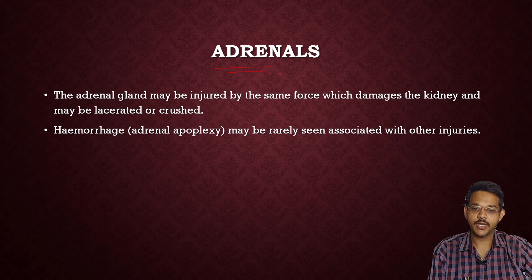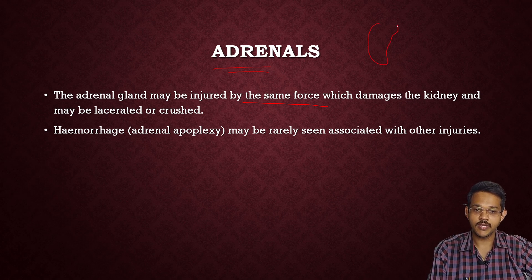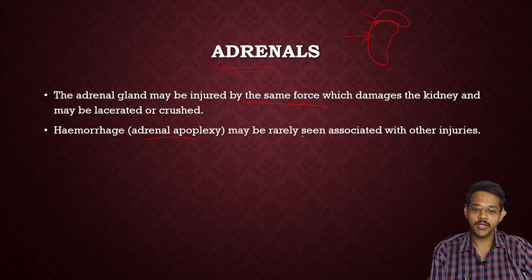Adrenal glands may be injured by the same force which damages the kidney, since they are situated on the superior part of the kidney. They are usually well protected, but any injury causing kidney damage can also cause adrenal injury. Hemorrhage — adrenal apoplexy — may rarely be seen, associated with other injuries.